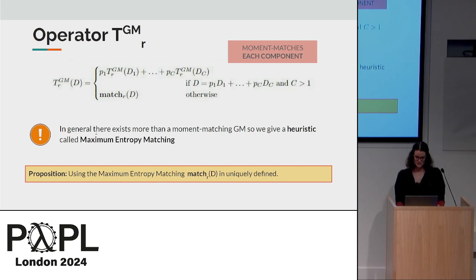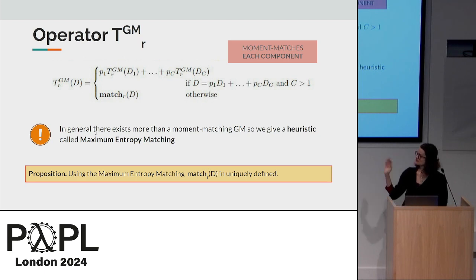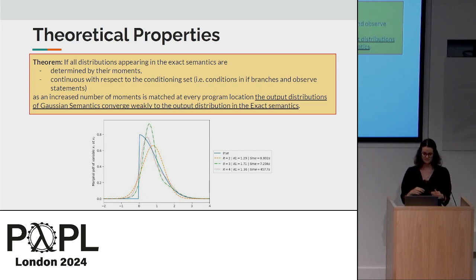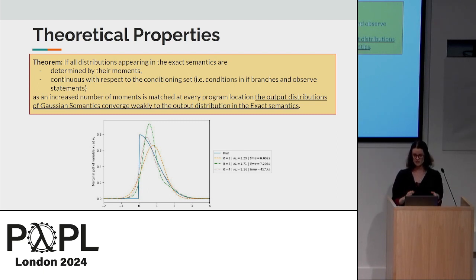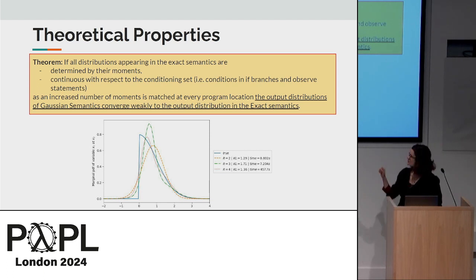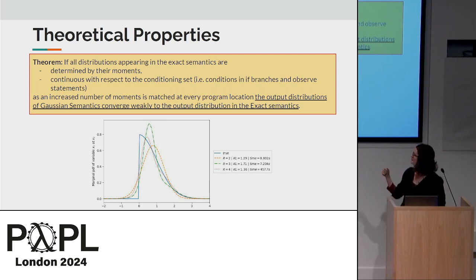We show it is possible to give a criterion so that this operator is well-defined. With this well-defined operator, we prove a theorem stating that when you moment-match an increasing number of moments at each program location, the distribution yielded by the Gaussian semantics tends to the distribution yielded by the exact semantics. In the graph you can see that the truncated Gaussian — the blue line — is approximated better and better by moment-matching two, three, or four orders of moments.